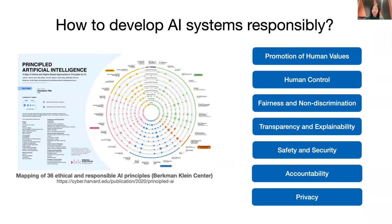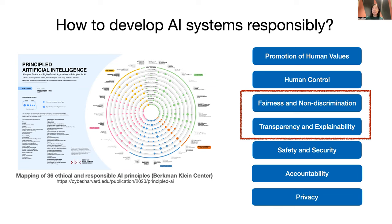Responsible AI is often operationalized through a few normative principles. For example, this Birkman report mapped RAI principles in many industry and government documents and summarized a few common themes. Among them, I will focus on two that are commonly prioritized, which are fairness and explainability.